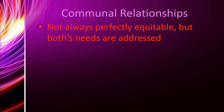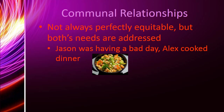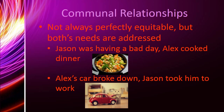Conversely, there are communal relationships where it's not always perfectly equitable, but both people's needs end up addressed. For example, Jason was having a bad day, so Alex cooked dinner. Then another day, Alex's car broke down, so Jason took him to work. They're not necessarily doing the same things for each other, but when they have needs, the other person tries to address those needs. A communal relationship isn't about doing a specific thing in return — it's about generally looking out for each other.